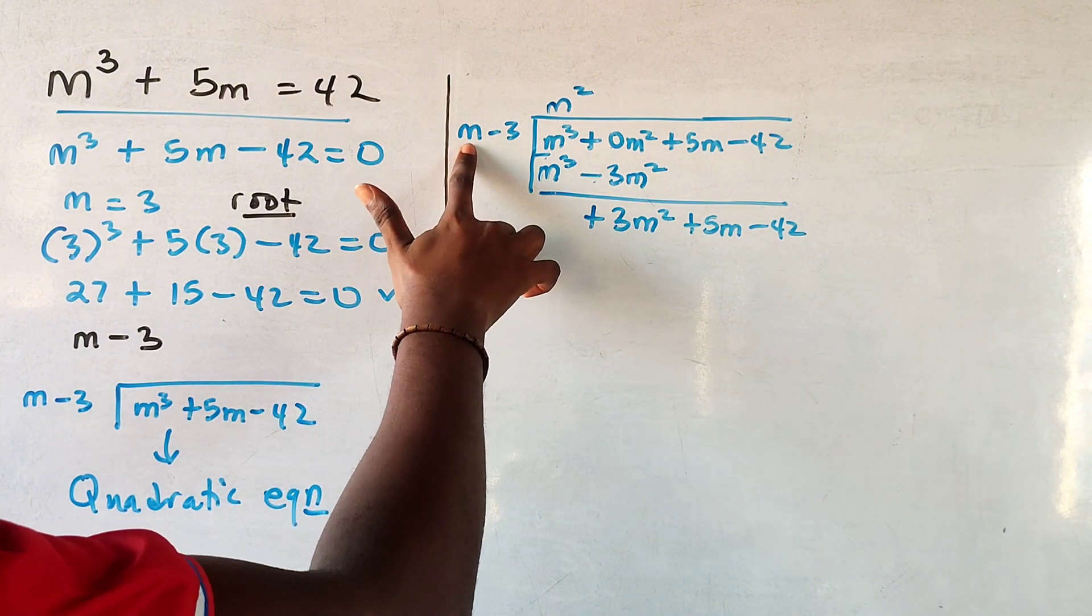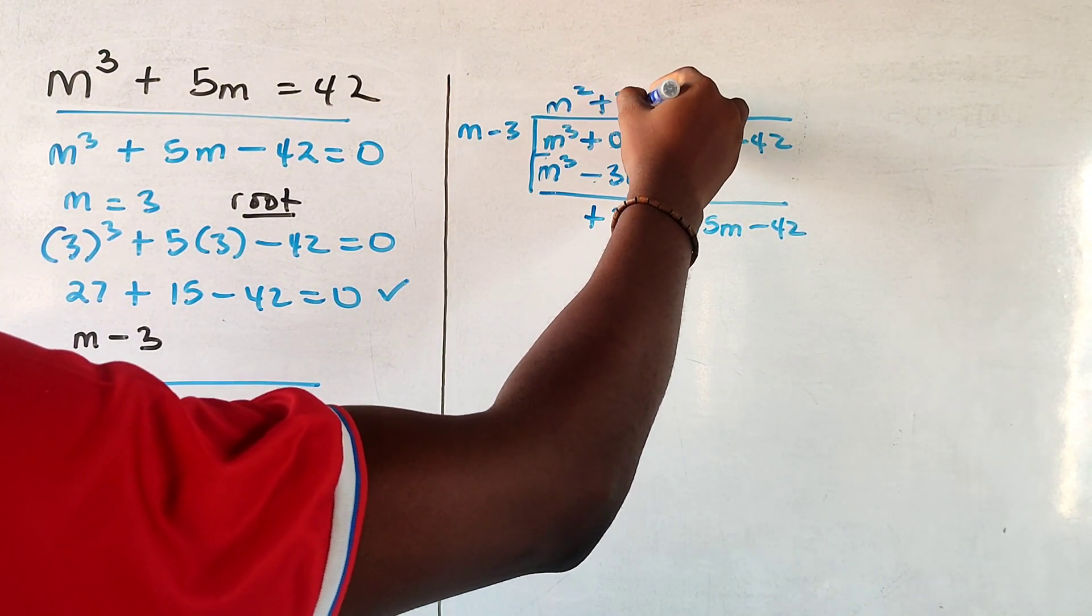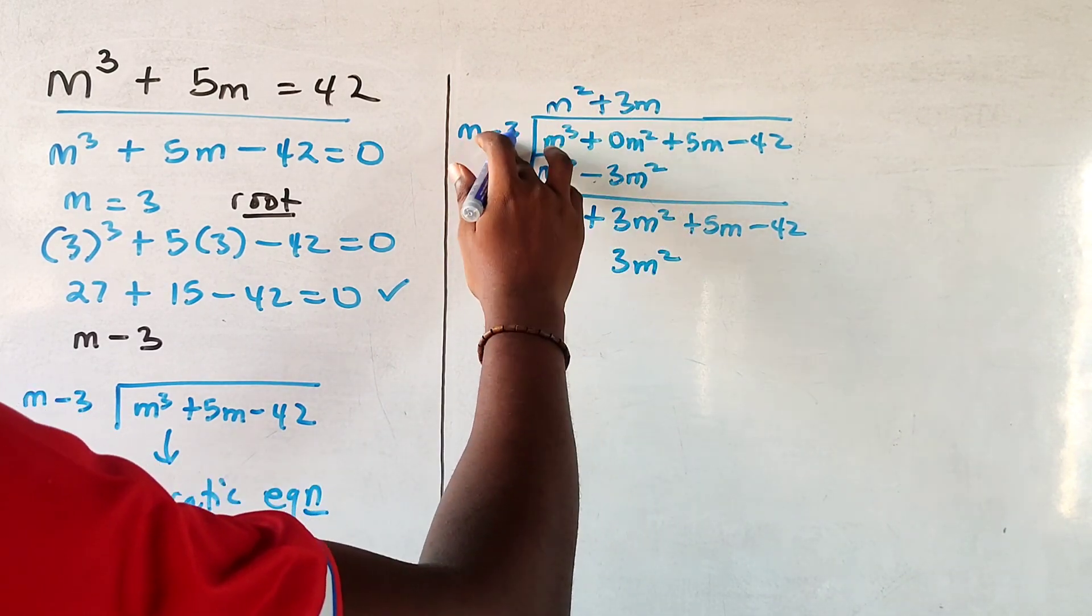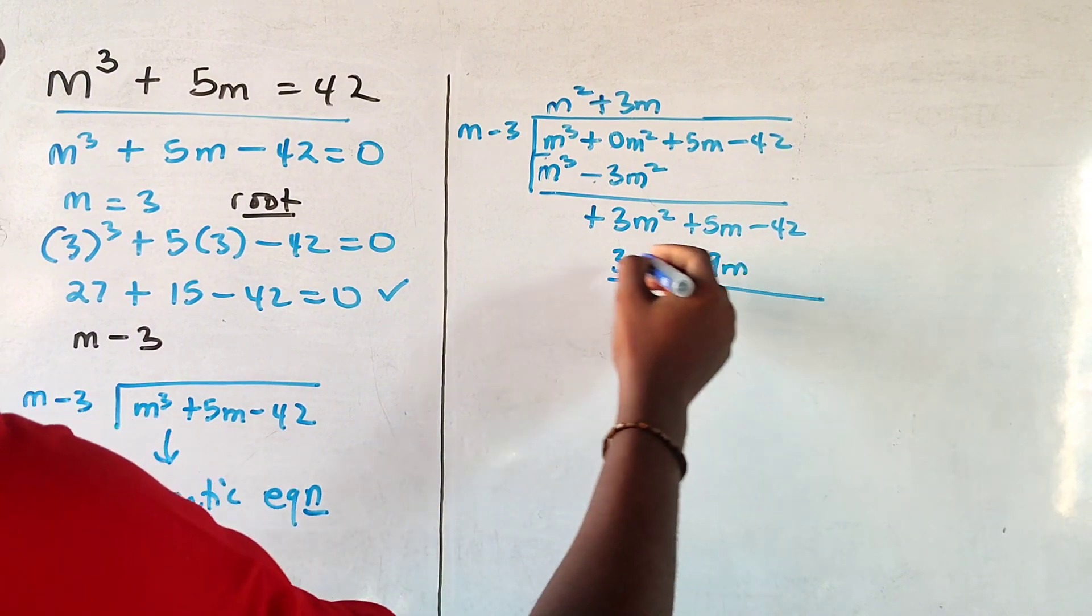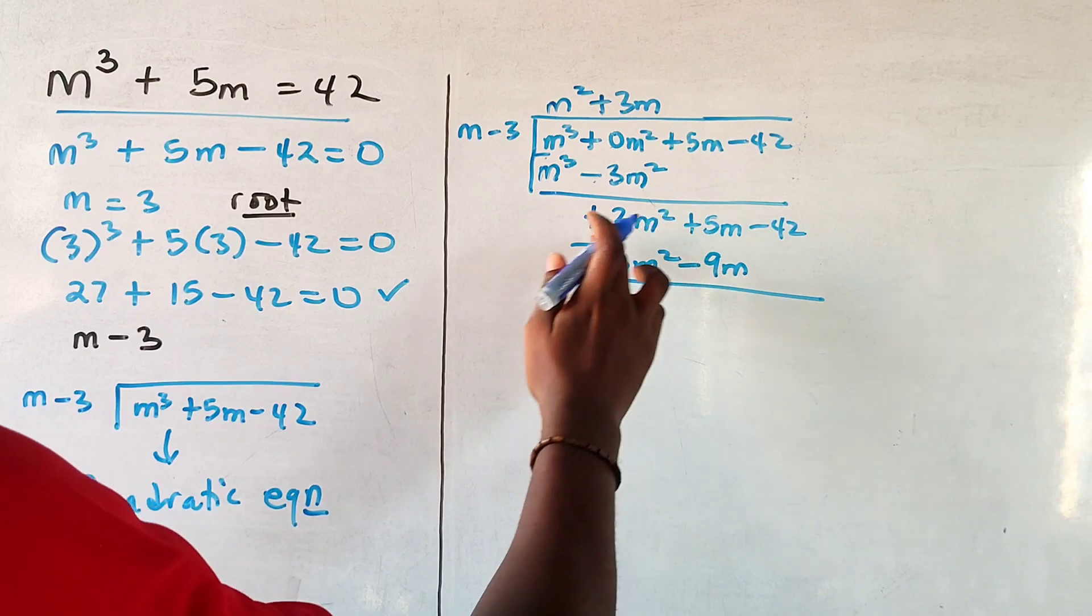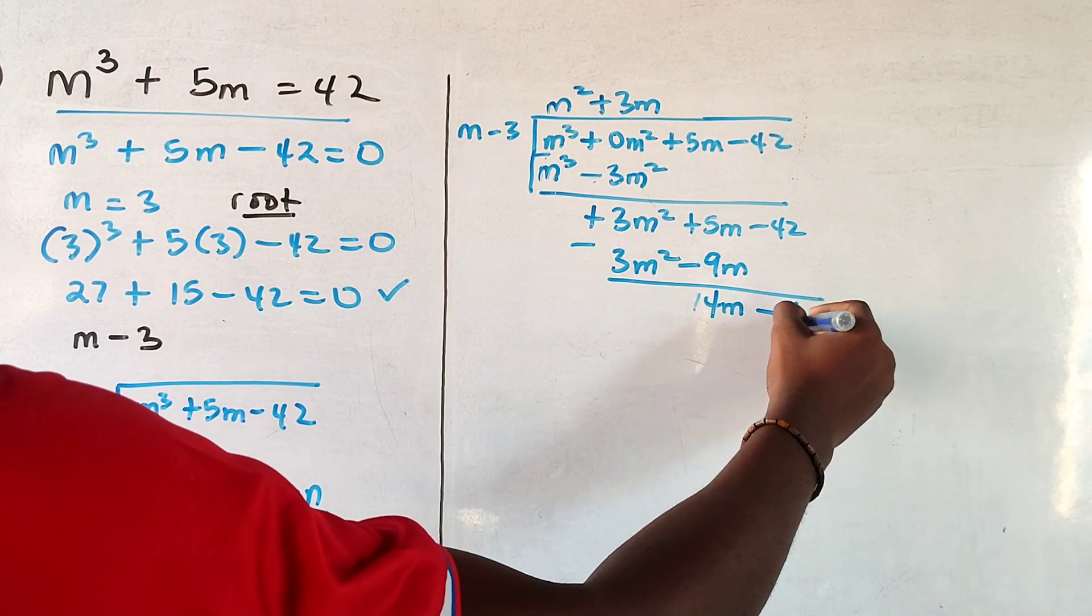Again, you ask what would I multiply by m that will give me 3 m squared. Of course that would be plus 3m. So 3m times m is 3 m squared, and 3m times minus 3 is minus 9m. So again you subtract here. This goes away, this is plus 5m minus minus 9m, which will give you 14m.